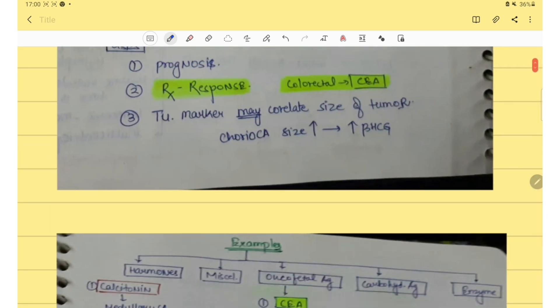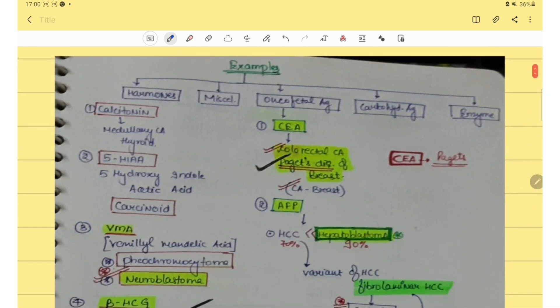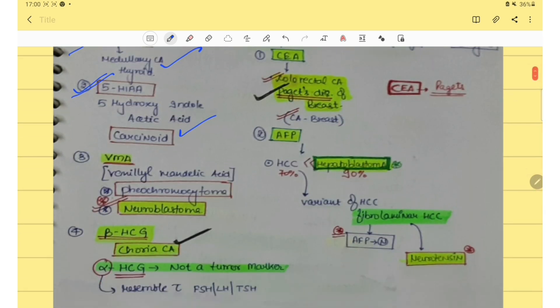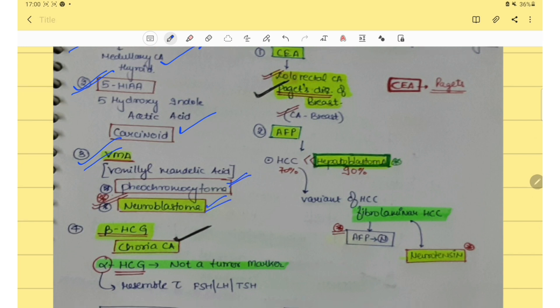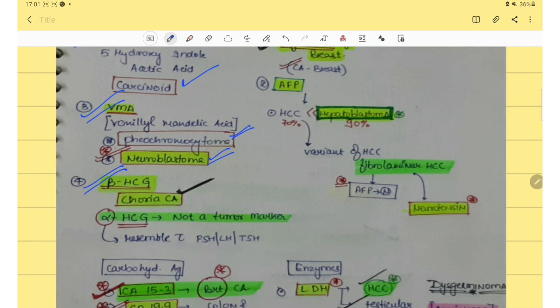You should know about the examples of tumor marker. Calcitonin is raised in medullary CA thyroid. Then 5-HIA that is raised in carcinoid. Then VMA that is raised in pheochromocytoma and neuroblastoma. Then beta HCG that is raised in choriocarcinoma and alpha HCG. This is not a tumor marker.